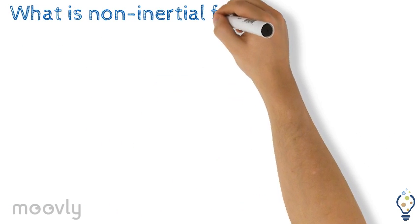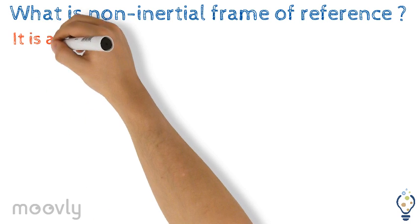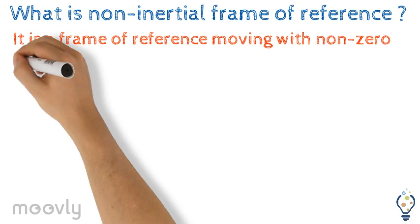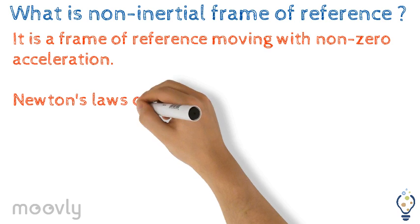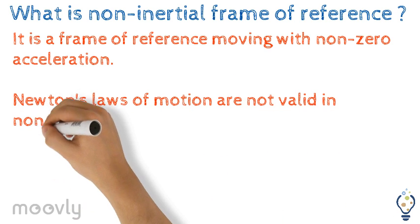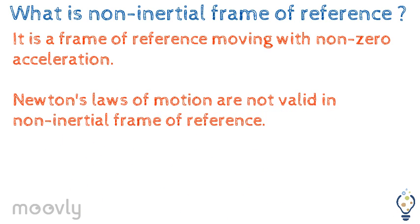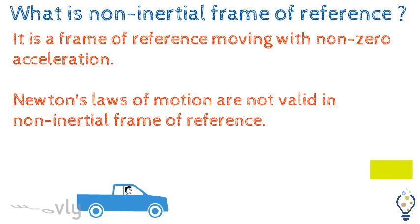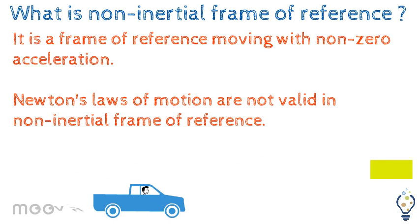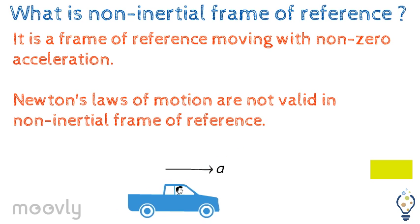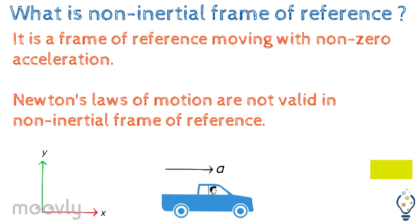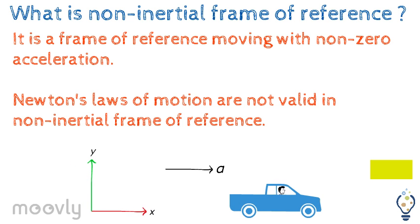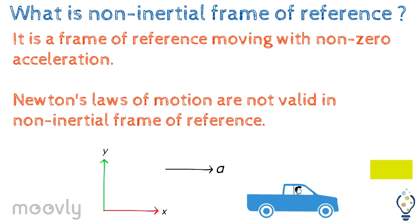What is a non-inertial frame of reference? It is a frame of reference moving with non-zero acceleration. Newton's laws of motion are not valid in a non-inertial frame of reference. Consider a boy observing a block while sitting in a car which is moving with an acceleration a. As the frame of reference is also moving with acceleration a, the frame of reference becomes non-inertial.